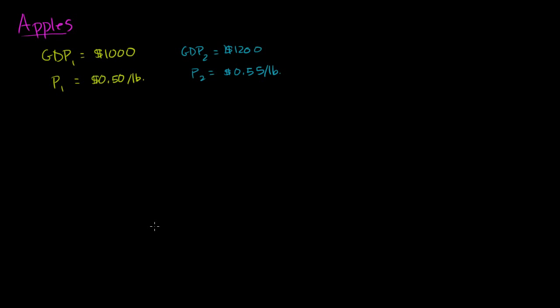The whole point of measuring GDP is measuring the productivity of a country. We're measuring in terms of dollars, but we care more than just the dollar amount — we really care whether this country was more productive, and how much more productive. If you just look at these GDP numbers, $1,200 is 20% larger than $1,000, so it looks like GDP grew by 20%. But is that an accurate representation of productivity? Did it actually produce 20% more goods? Some of this GDP increase might have come just from higher prices, which doesn't make the country more productive.